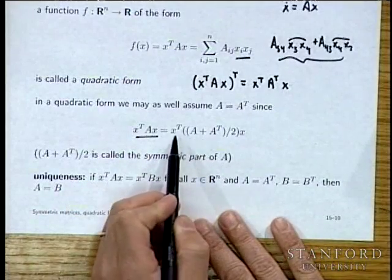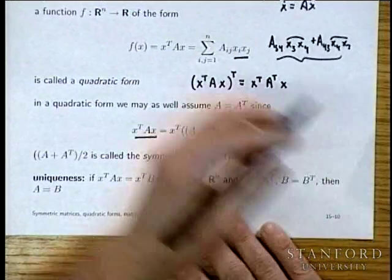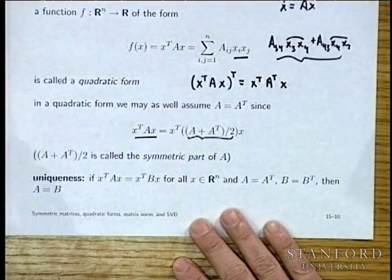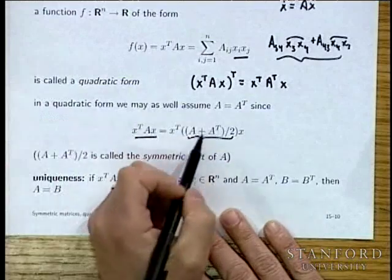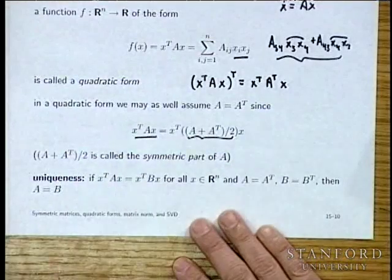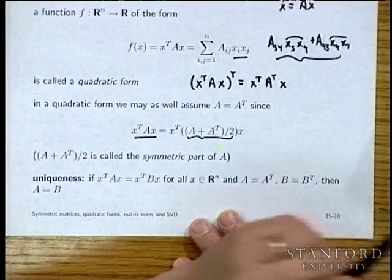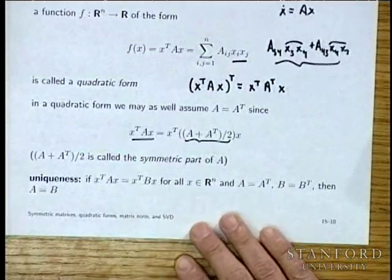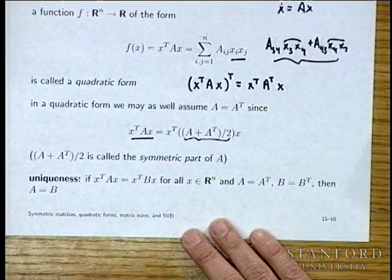Any quadratic form can be written as a quadratic form with (A + A transpose)/2. That's called the symmetric part of a matrix. Forming A plus A transpose over 2 replaces each entry with the average of itself and its transposed element — so A_34 becomes (A_34 + A_43)/2.